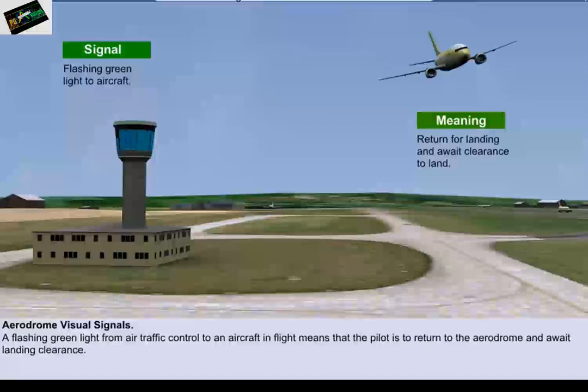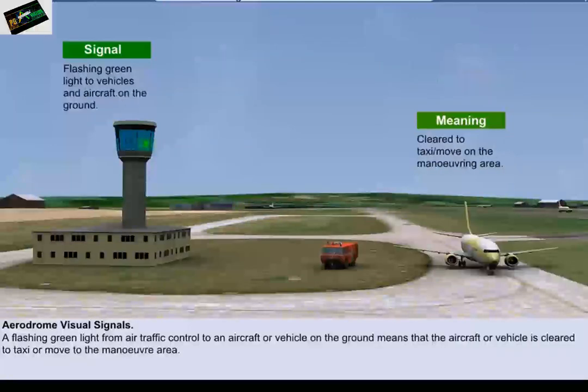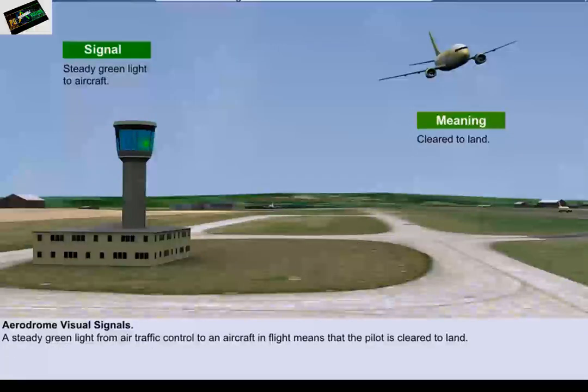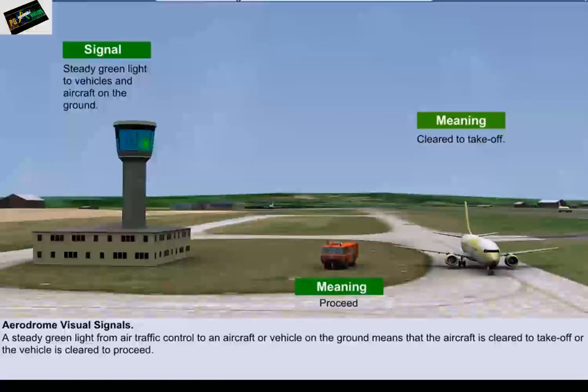A flashing green light from air traffic control to an aircraft or vehicle on the ground means that the aircraft or vehicle is cleared to taxi or move to the manoeuvre area. A steady green light from air traffic control to an aircraft or vehicle on the ground means that the aircraft is cleared to take off or the vehicle is cleared to proceed.